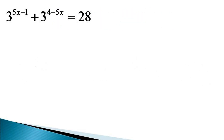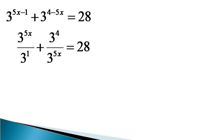To solve this equation, we express it in the form as 3 raised to the power 5x divided by 3 raised to the power 1 for the first term on the left hand side. The 3 raised to the power minus 1 becomes 3 raised to the power 1 in the denominator, plus the second term becomes 3 raised to the power 4 divided by 3 raised to the power 5x, becoming equal to 28.